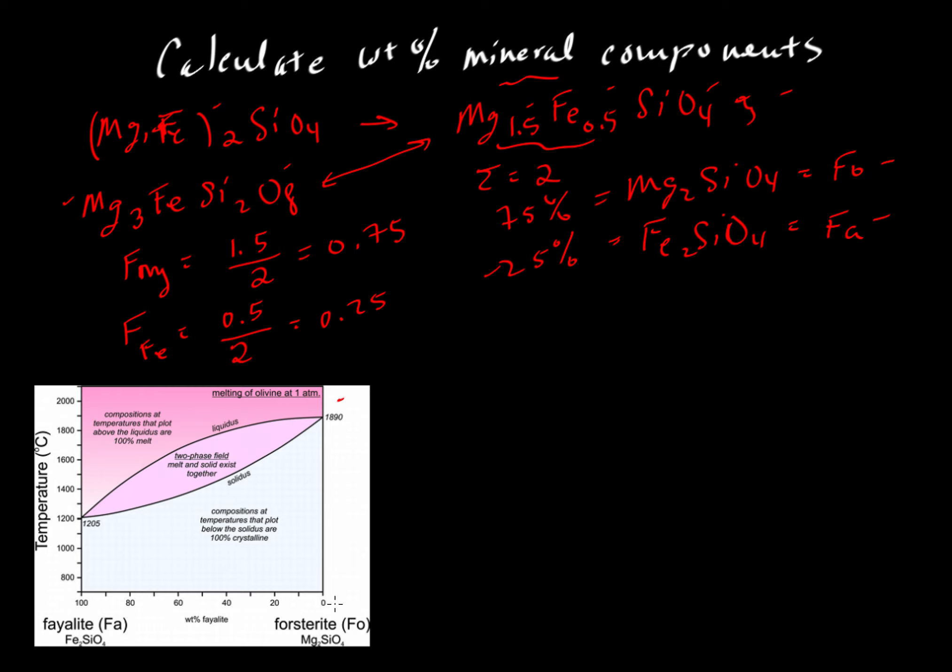Does that mean we can plot these numbers on this phase diagram? Not so fast. This is the weight percent fayalite, not the molecular percent or atomic percent. We have 25% fayalite here.